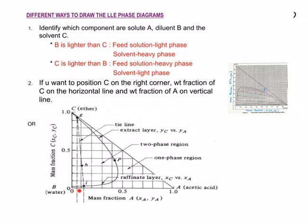We're going to assume that your input stream values are not in equilibrium yet because they have not undergone the process yet. Therefore, the label for your L0 will not be on the raffinate layer. Similarly, your solvent, which is at the input stream, is not at equilibrium composition, so it can lie outside this particular layer.